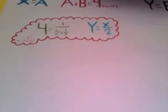So let's plug in Y and do the problem. 1 over X plus 1 over Y equals 1 fourth. 1 over X plus 1 over X over 2 equals 1 fourth. 1 over X plus 2 over X equals 1 fourth. 3 over X equals 1 fourth.